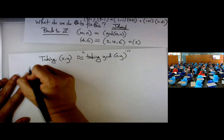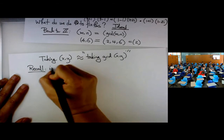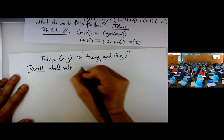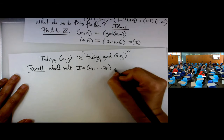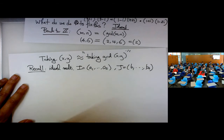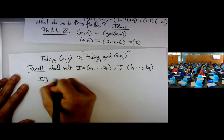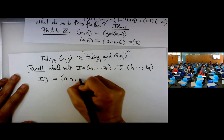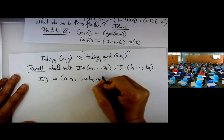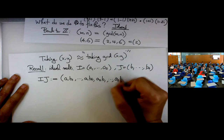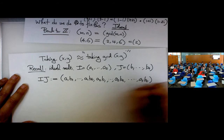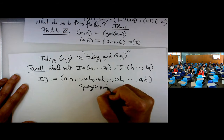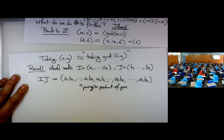I also want to recall ideal multiplication. If I is the ideal generated by some numbers and J is the ideal generated by another set of numbers, then I can multiply two ideals together. The product I·J is the ideal generated by the pairwise products of the generators of the two ideals.